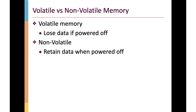Another important distinction is between volatile and non-volatile memory. Volatile memory loses data when you shut it off — the RAM used in main memory on a typical computer's motherboard is volatile. If you shut off the power, all contents of main memory disappear. Non-volatile memory retains data when turned off, which is useful if we want something available at startup. We'd like memory that retains its content so we can use it to boot the computer.